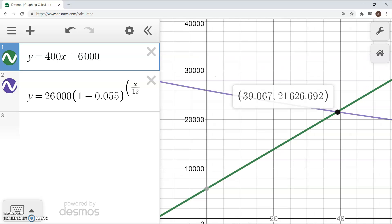And I can see here that at 39 months, because that's our x, the value of the car and the amount spent on it are meeting here. So about 39 months.